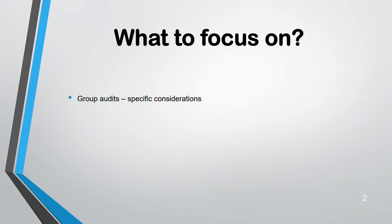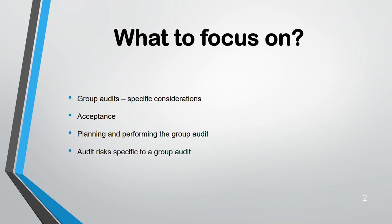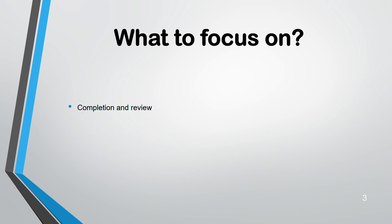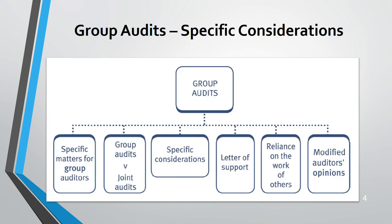In this lecture we will cover: acceptance — how does a group auditor accept and what are the considerations; how to plan and perform the audit; risks for group audit; auditing the consolidated financial statement; completion and review; reporting; joint audit; and transnational audit. These are different terms. Specific matters include: group audit vs joint audit, considerations, letter of support, reliance on the work of others, and modified auditor's opinion.